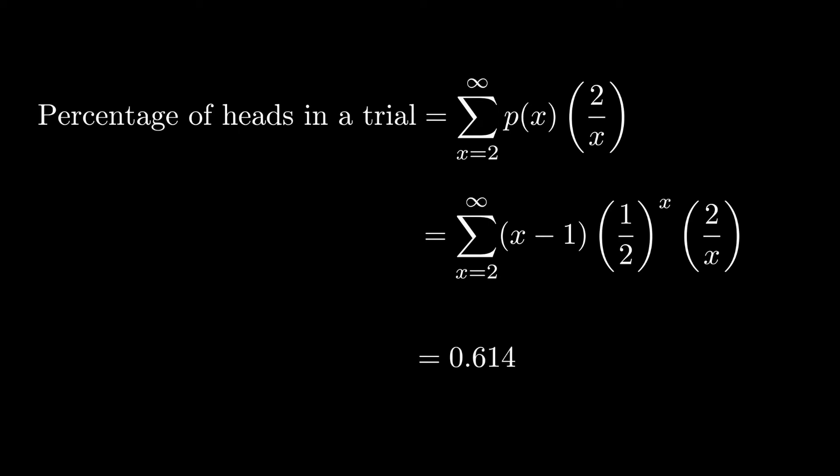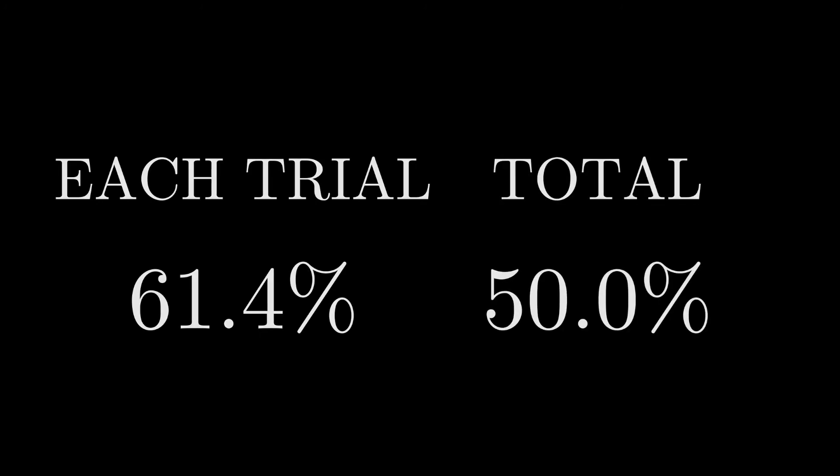So what this says is: as we approach an infinite number of trials, the average percentage of heads you'll see in each trial is roughly 61%. But it's still true that as you approach an infinite number of trials, you should see about 50% heads in total. This means the data from the beginning wasn't ridiculous at all — we should expect a difference between the proportion of heads in each trial and the proportion of heads in total. I hope this video is interesting because this is somewhat of a paradox. My expectation was that these numbers would be the same, but in fact they are not. Anyway, thank you for watching and I hope to see you soon.